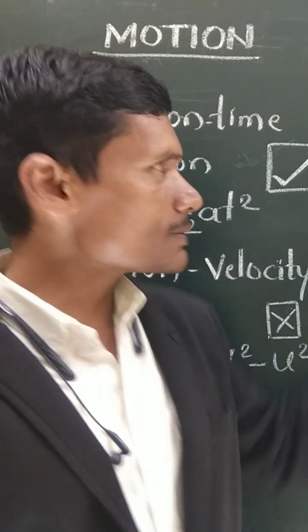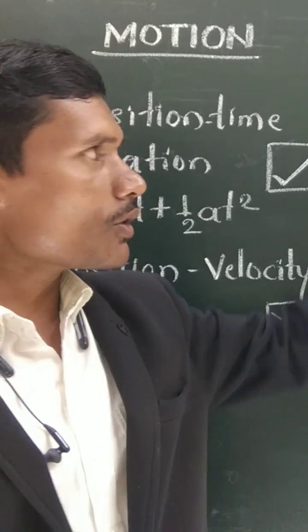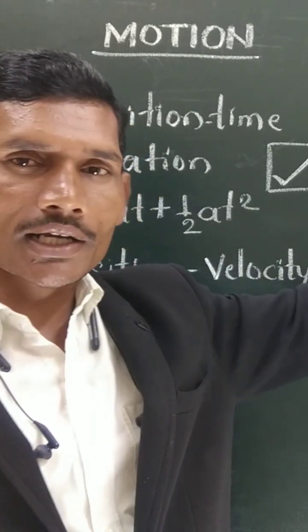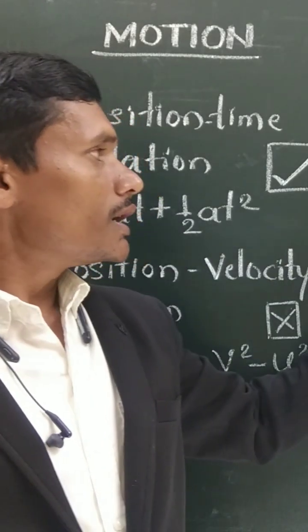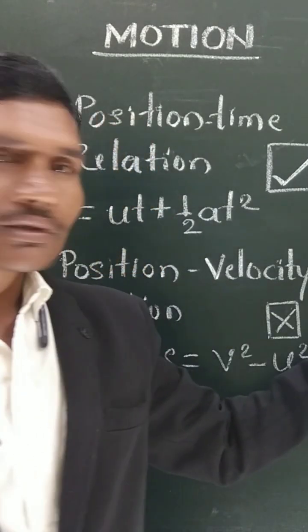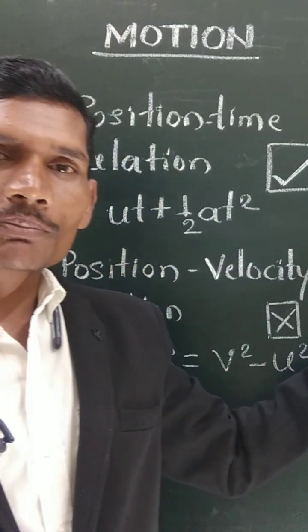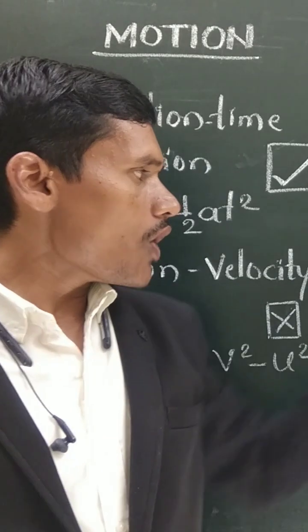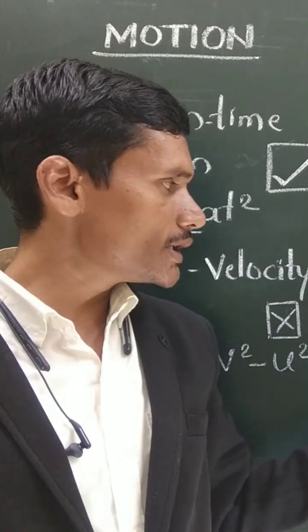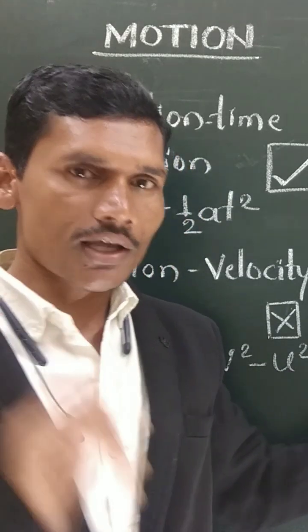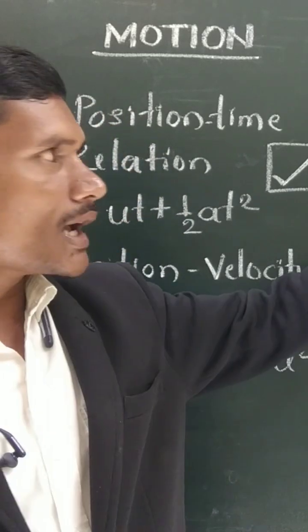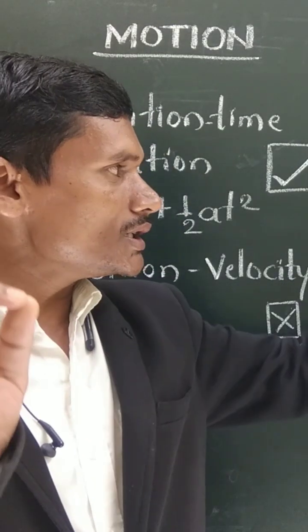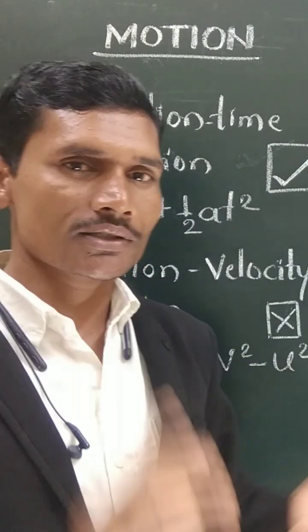When you read this problem: 'A motorboat starting from rest on a lake accelerates in a straight line at a constant rate of 3 meters per second squared for 8 seconds. How far does the board travel during this time?' We can easily identify that this is a position-time relation.